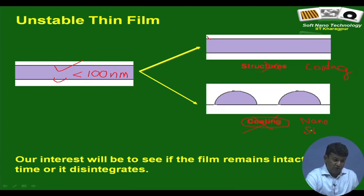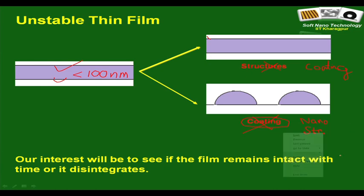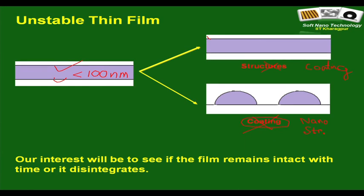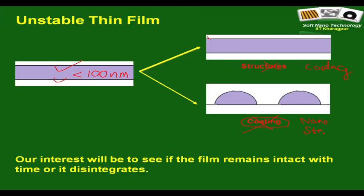But if the interaction is attractive, the film might disintegrate and evolve into some sort of nano structures. This is the so-called spontaneous instability in a thin film. It is hard to say whether it is good or bad — it depends on the application. Since nano-structured surfaces are important in certain settings, this type of instability originating from van der Waals forces can be used for nano structuring, though there are limitations we will discuss.